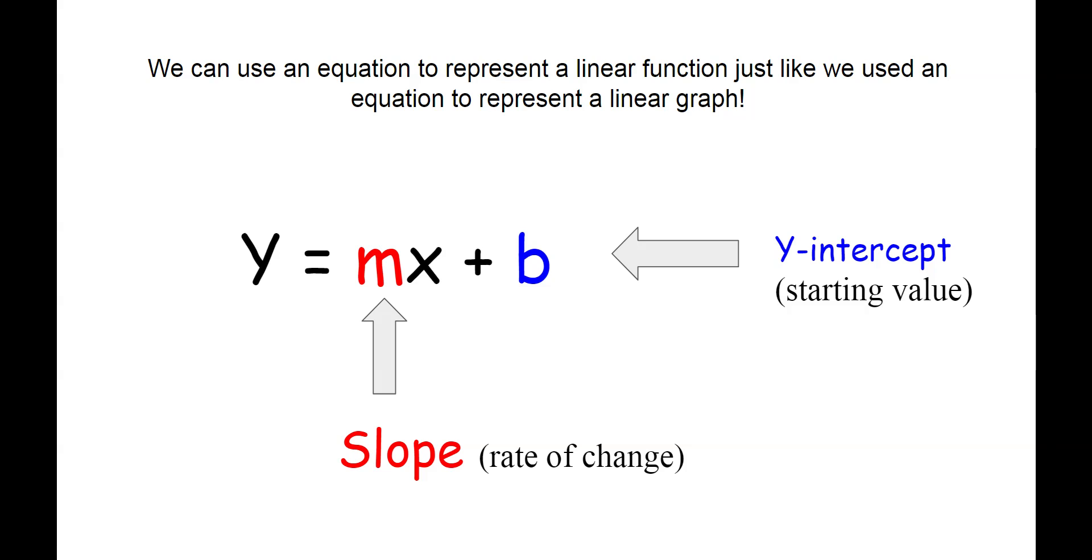We also learned earlier this year that we can use an equation to represent a linear relationship. A linear function can be represented using the same equation, y equals mx plus b, where m is the slope or the rate of change, and b is the y-intercept or the starting value.